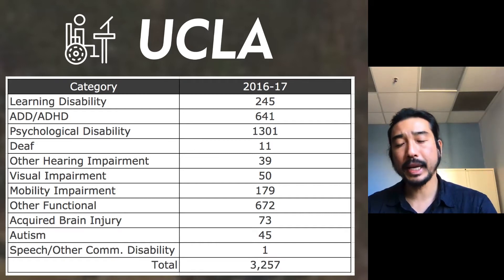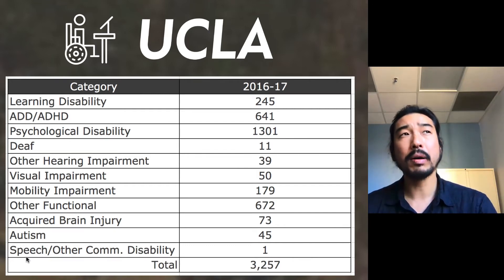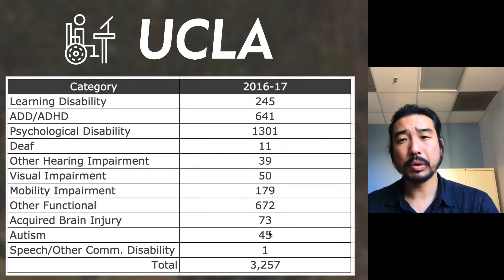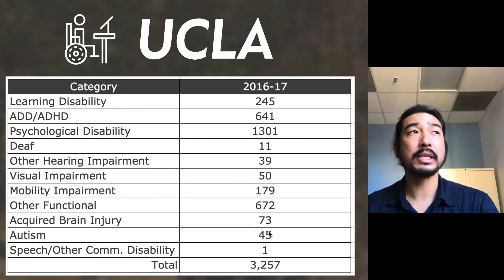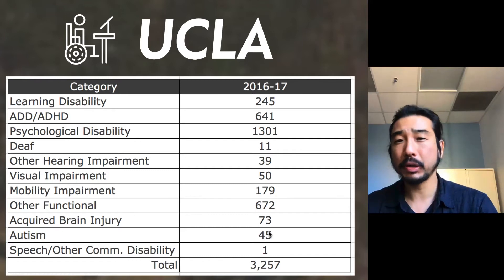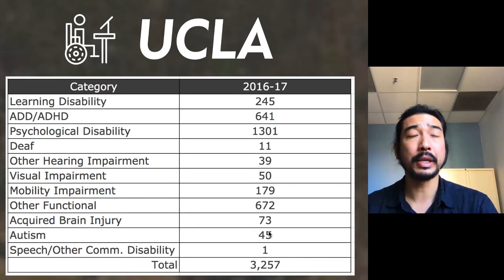ADHD is at 641 at UCLA, and is likely even higher than reported — we know around 11% of elementary school boys are being diagnosed with ADHD. Autism spectrum disorder is at 45 and is also rising each year. As of 2018, about 1 in 68 ten-year-olds is being diagnosed on the autism spectrum, with numbers trending higher in younger generations, though conclusive data for children under eight or nine is still limited.